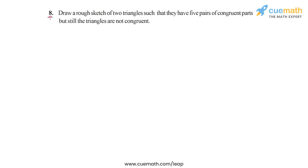Question 8 of this exercise says to draw a rough sketch of two triangles such that they have five pairs of congruent parts but still the triangles are not congruent. This is actually a very interesting question because it involves some deep thinking, and interestingly, in many other places that I checked, the solution to this question is given incorrectly.